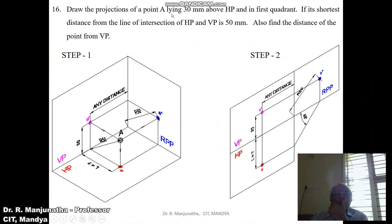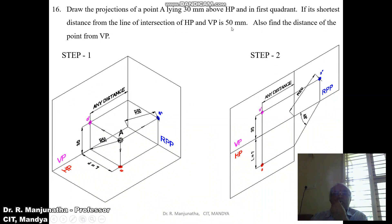Draw the projections of a point capital A lying 30 mm above HP and in the first quadrant. The shortest distance from the line of intersection of HP and VP is 50 mm. Also find the distance of the point from VP.